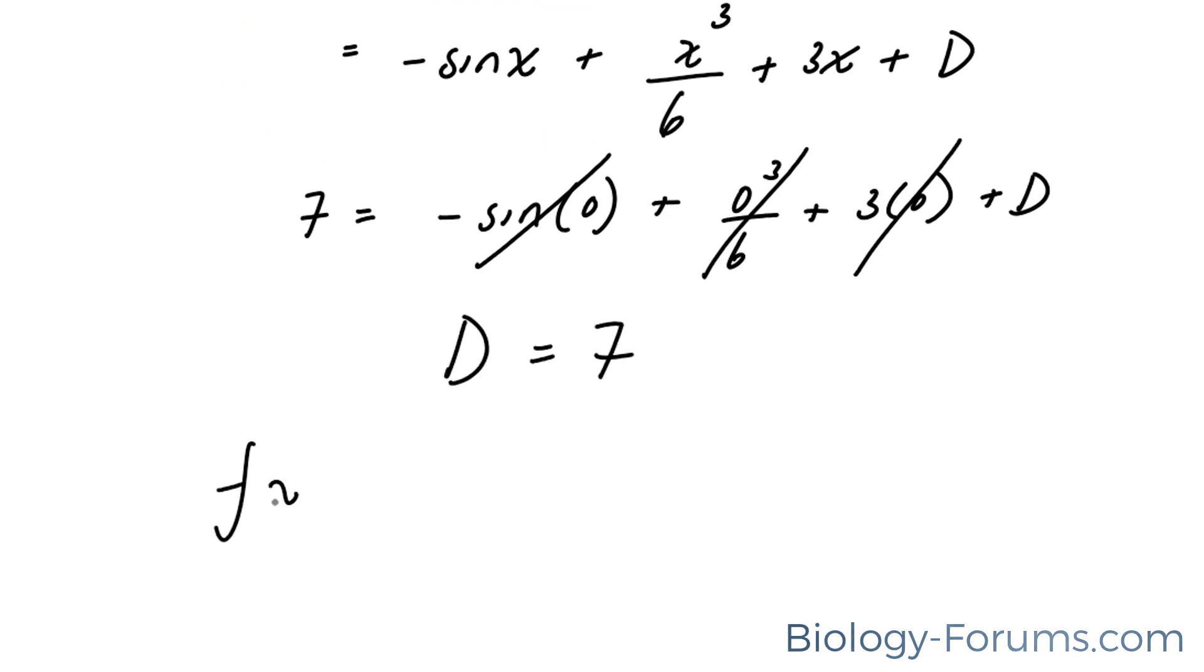So to write this all out nice and clean, we end up with negative sine x plus 1 sixth of x to the power of 3 plus 3x plus 7. And there you have it. That is how to use clues given the first or second derivative to find the arbitrary value that existed. If you found this tutorial helpful, please support our channel by subscribing or by liking this video. If you have any further questions, you may visit our website at biology-forums.com. We are an online service for students seeking free homework help. See you soon.